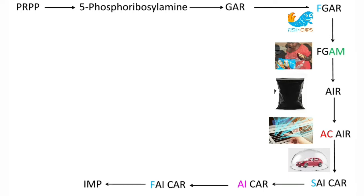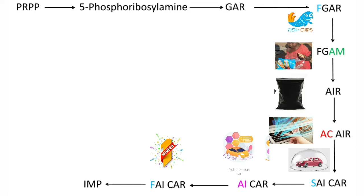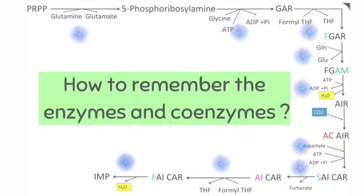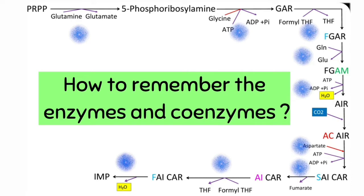What is special about this CAR? This is AICAR — artificial intelligence CAR. And what makes it so special? Because it is the first AI CAR. So after AICAR, the next intermediate is FAICAR. And how is this used? This first AI CAR is used for an important program. So the next intermediate becomes IMP.